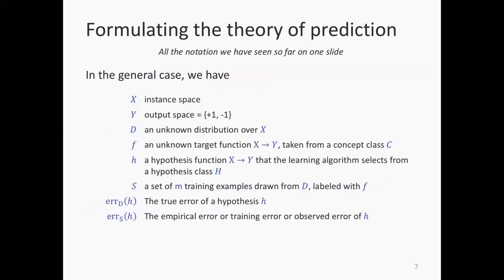Summarizing all the symbols: x is the instance space; capital Y is the label space or output space, which contains just two elements, minus one or one; D is a fixed but unknown distribution; f is the unknown target function that we seek to learn, mapping any instance to a label; little h is a hypothesis function that our learner chooses from hypothesis space capital H; S is a set of training examples; error_D is the true error or generalization error; and error_S is the empirical error, which is the fraction of examples in some set S that the hypothesis gets wrong. I wanted to put all these symbols on one slide so they seem familiar.